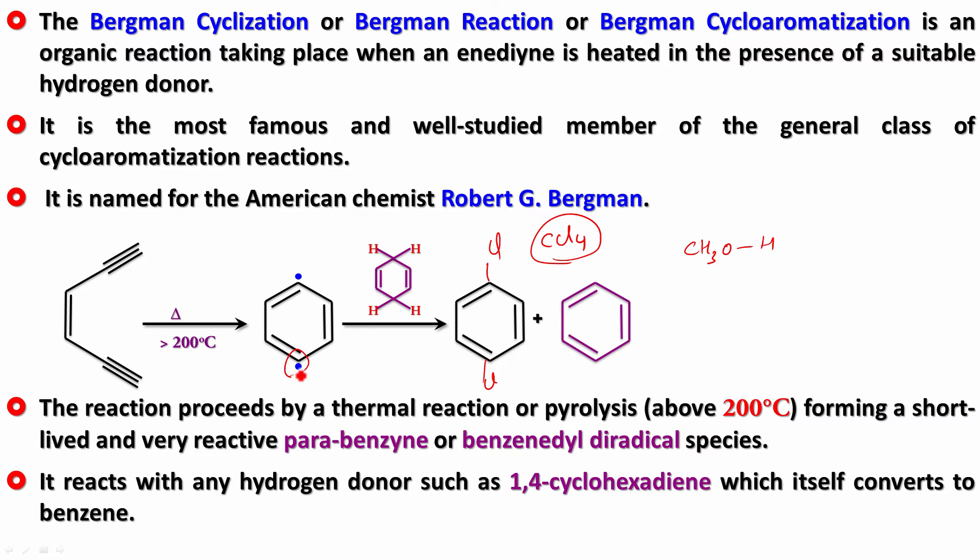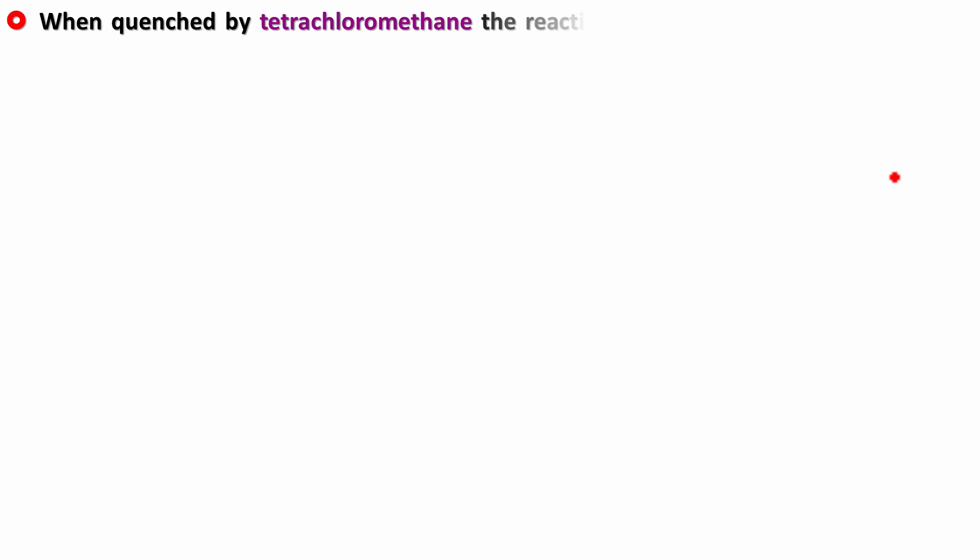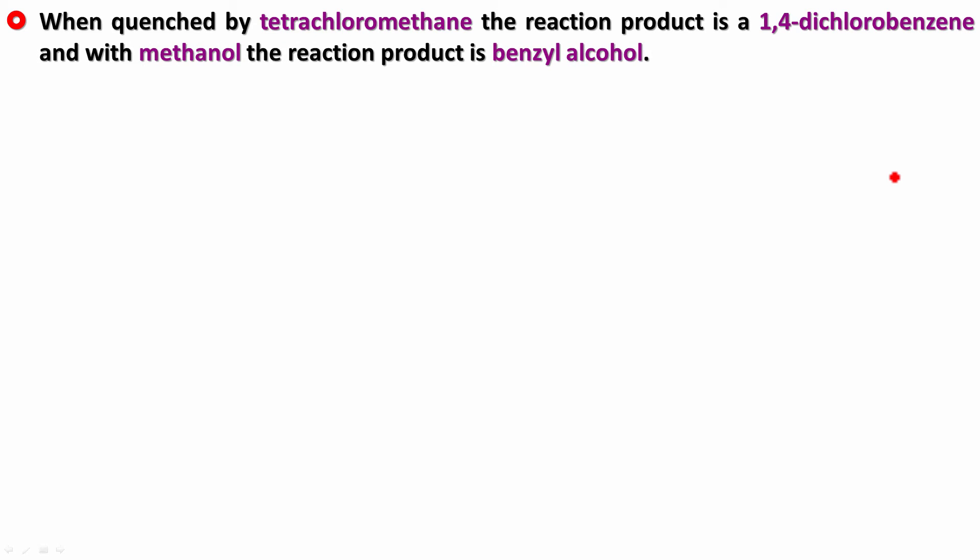If you treat it with methanol, one of the carbons here would take this H. The H goes and attacks here and the CH2 attacks this and you get benzyl alcohol. When quenched with tetrachloromethane the reaction product is 1,4-dichlorobenzene, and with methanol the reaction product is benzyl alcohol.